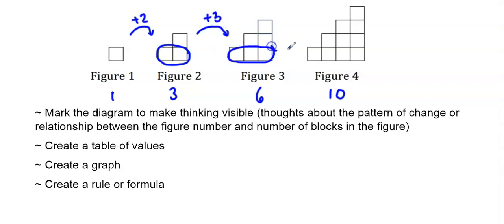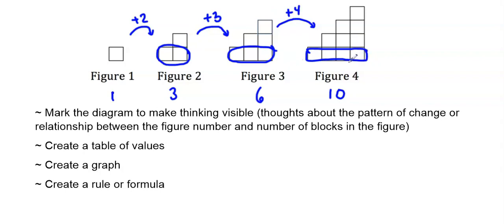Figure three added three blocks, and figure four added four blocks. You might have seen this as adding another column each time, or adding a diagonal. However you see it changing, just make sure you mark it on your diagram the way that you see it.